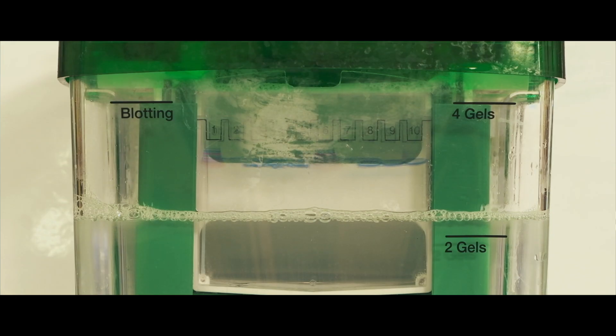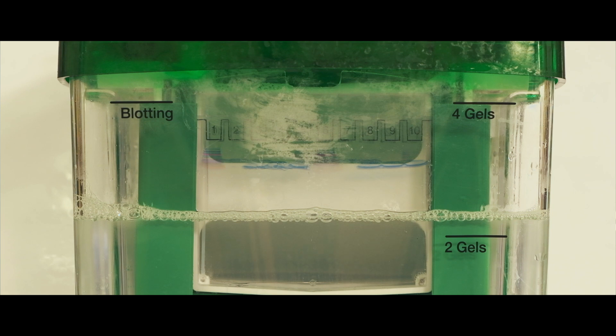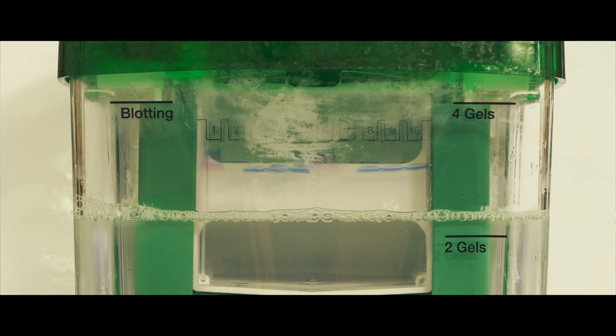The proteins are separated in a gel contained in a tank filled with buffer and connected to a power pack. The gel has wells in which the samples are placed. When a current is applied, the proteins migrate down the gel. Smaller proteins will be able to travel through the matrix within the gel faster than larger proteins.